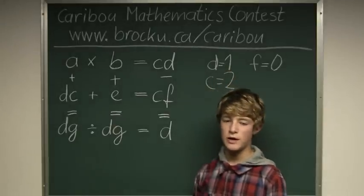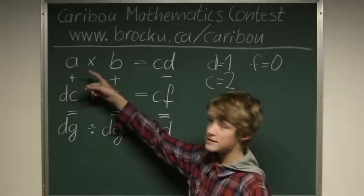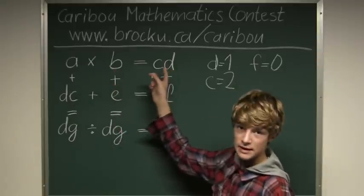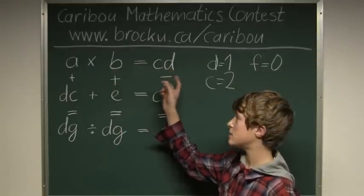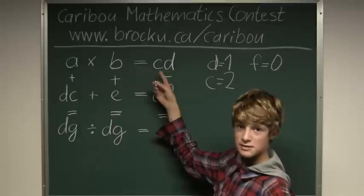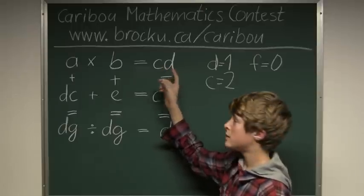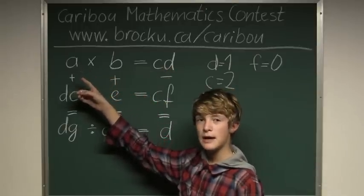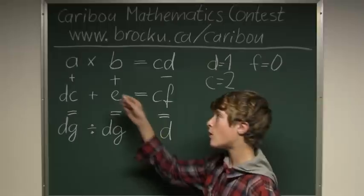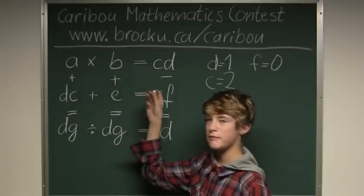The next special equation would be A times B equals CD. Since C is 2 and D is 1, CD would be 21. So it's either A is 7 and B is 3, or A is 3 and B is 7.